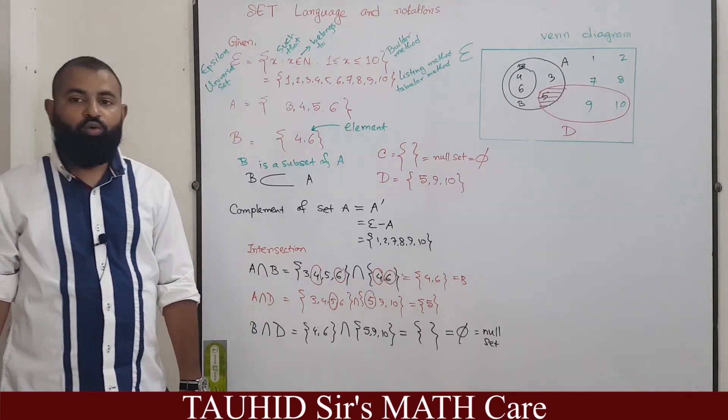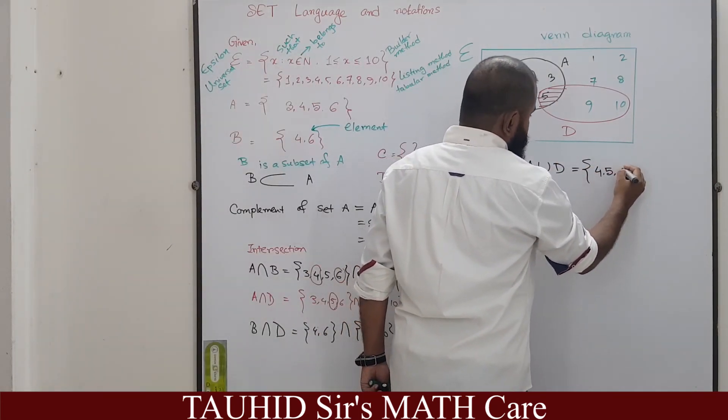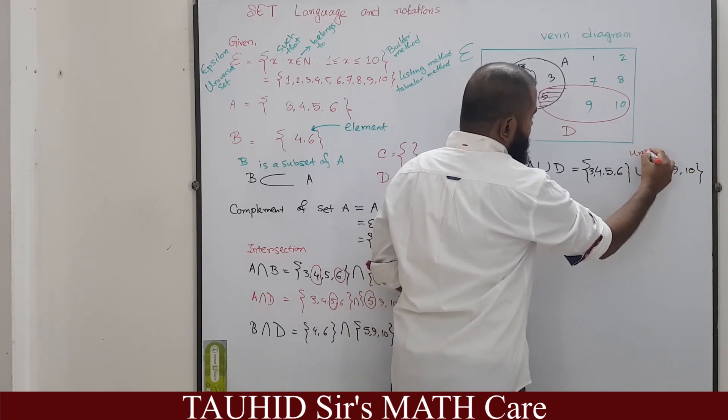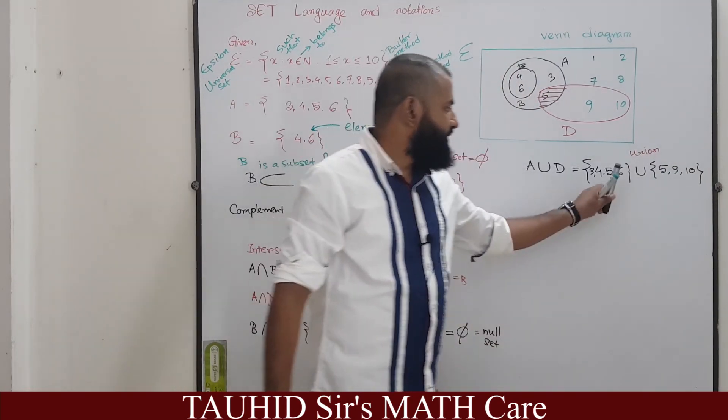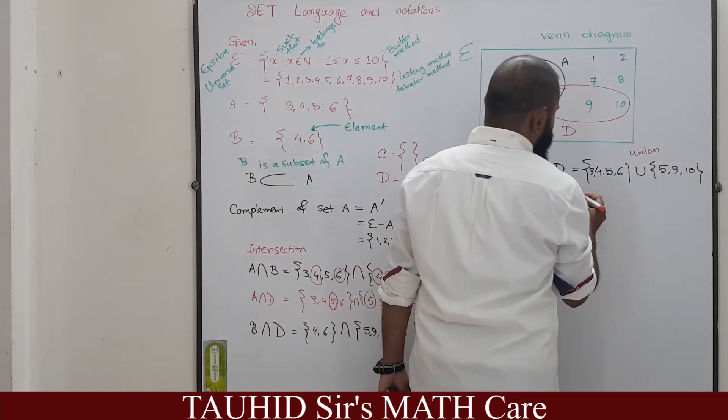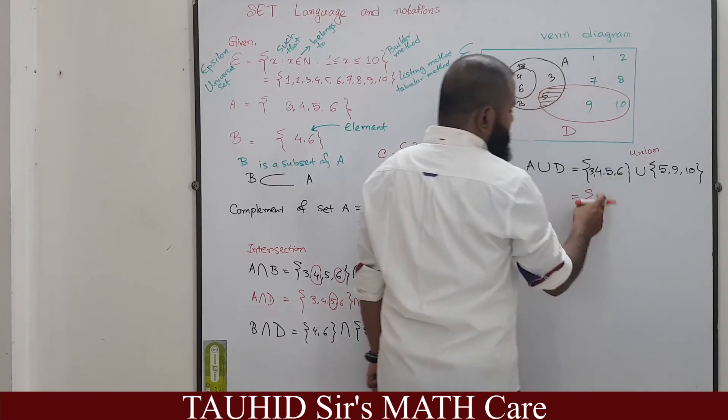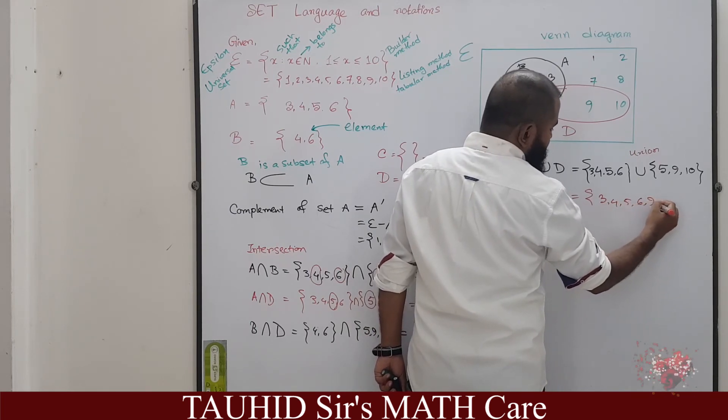So we have learned already about complement, we have learned about intersection and now we will learn about union. A union D, this notation is a union notation. This will unite these two sets.